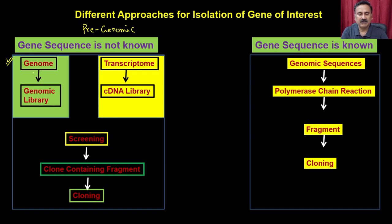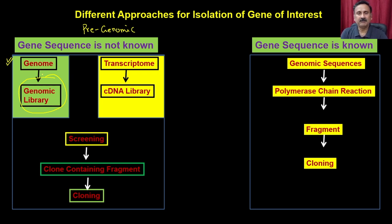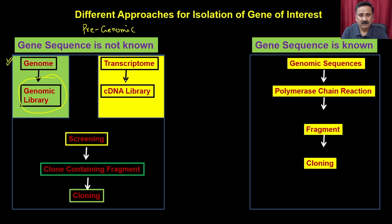In the previous lecture we discussed how you can identify the gene if the genome is known. You have to prepare a genomic library — a collection of genes cloned into individual clones representing the complete genome. If the protein is getting expressed and you have tools such as antibodies or expression constructs to screen expression clones, then you have to isolate the transcriptomes.